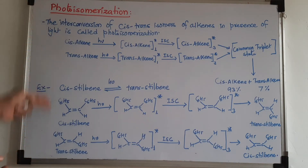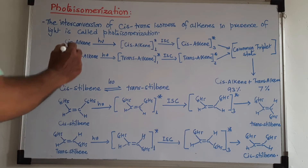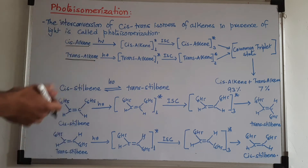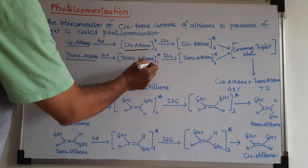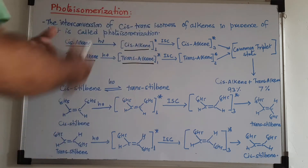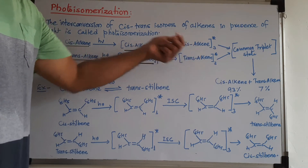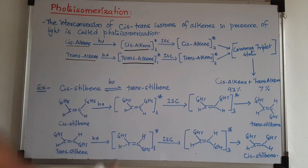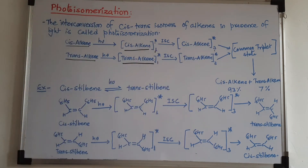Photoisomerization is a photochemical reaction where a cis alkene or trans alkene, when irradiated with light of a certain wavelength, undergoes excitation according to the Jablonsky diagram. The alkene is converted to the singlet excited state, and from the singlet excited state it goes to the triplet excited state by inter-system crossing. Here, the star means excited state, one stands for singlet, and three stands for triplet.